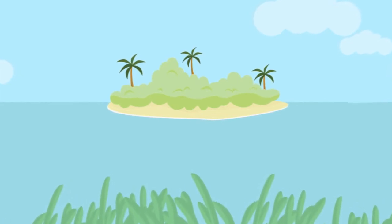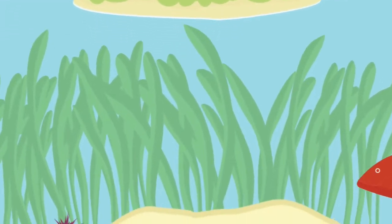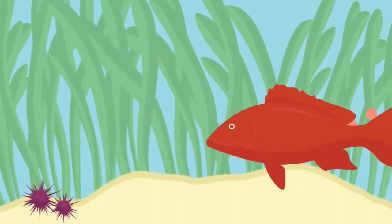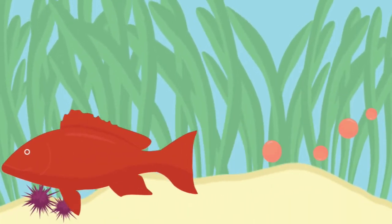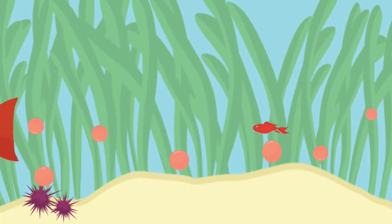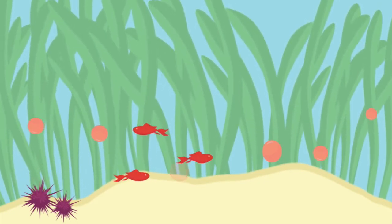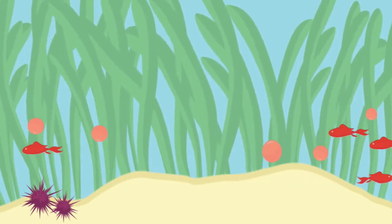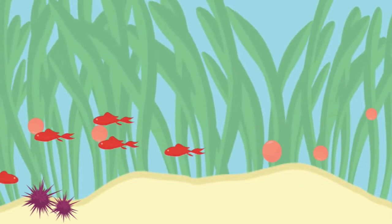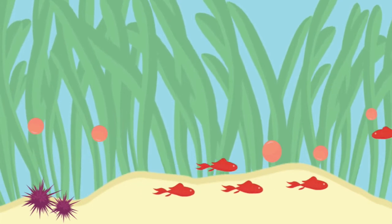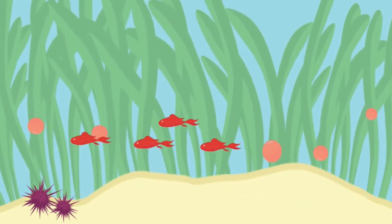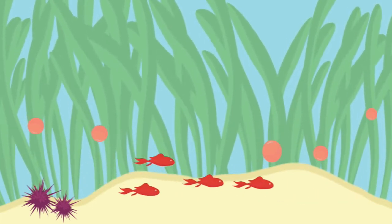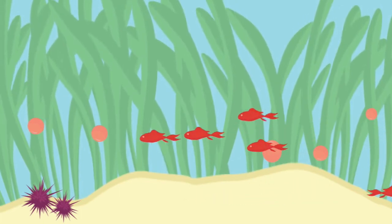Protected from wave action, seagrasses act as a nursery for many species of reef and deep-sea fish. Females come to the lagoon to lay eggs. After hatching, the newly emerged fish live, feed, and hide between the blades of grass from predators. They remain there until they are big and strong enough to leave the protected area.